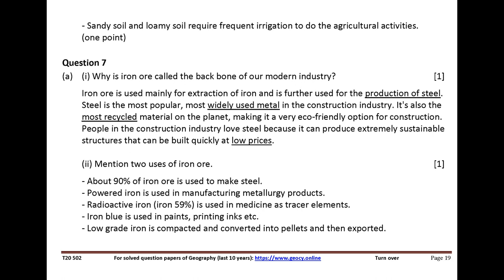Mention two uses of iron ore. About 90% of iron ore is used to make steel. Powdered iron is used in manufacturing metallurgy products. Radioactive iron is used in medicine as tracer elements. Iron blue is used in paints, printing inks, etc.